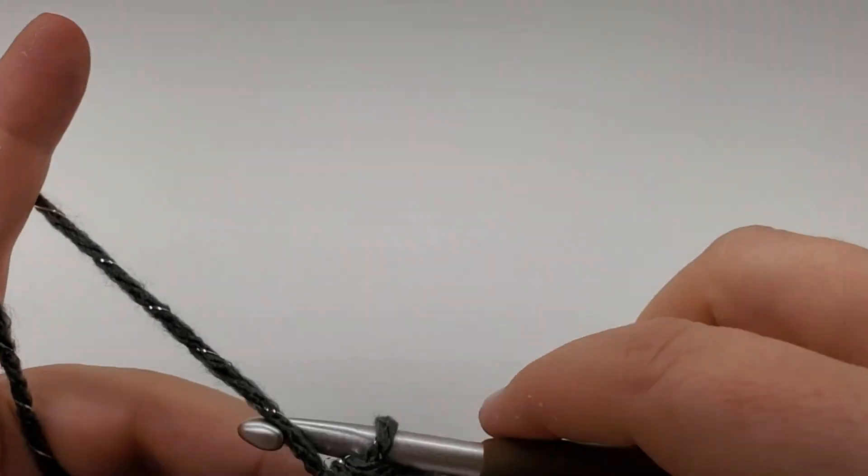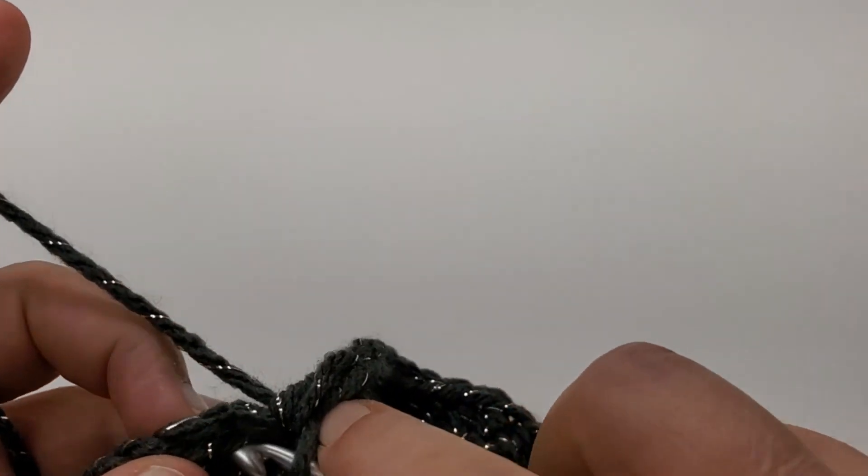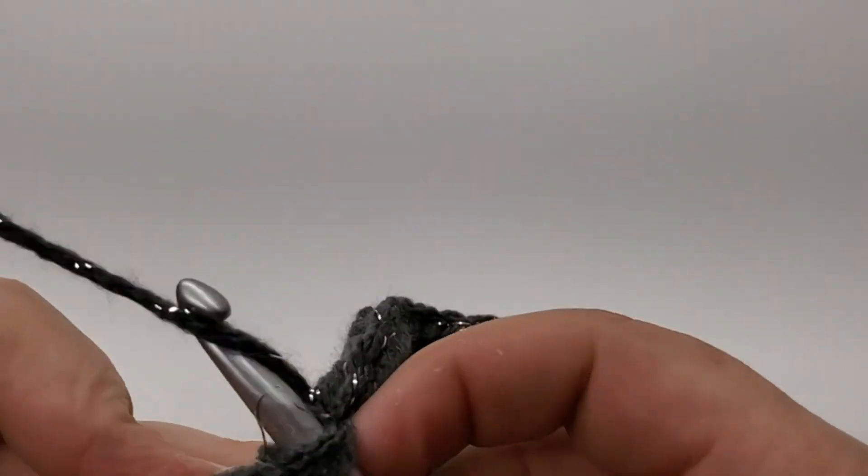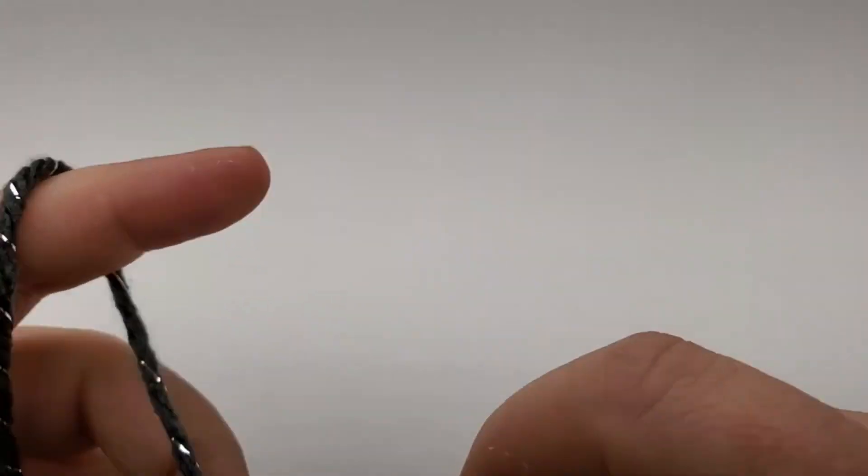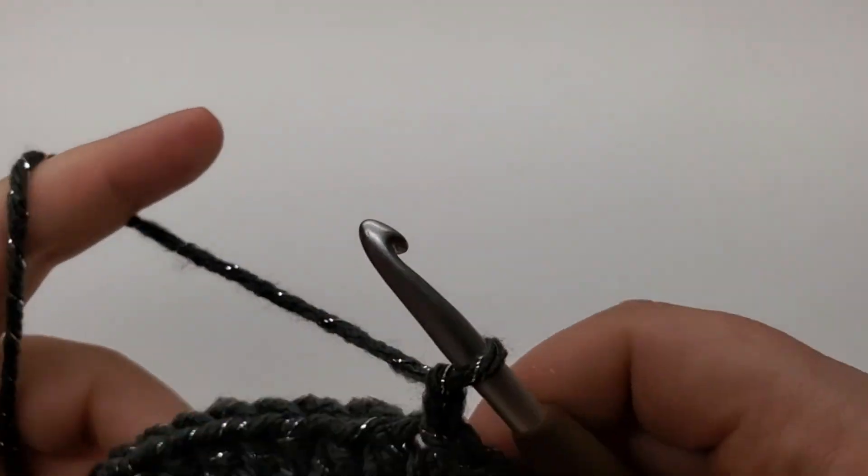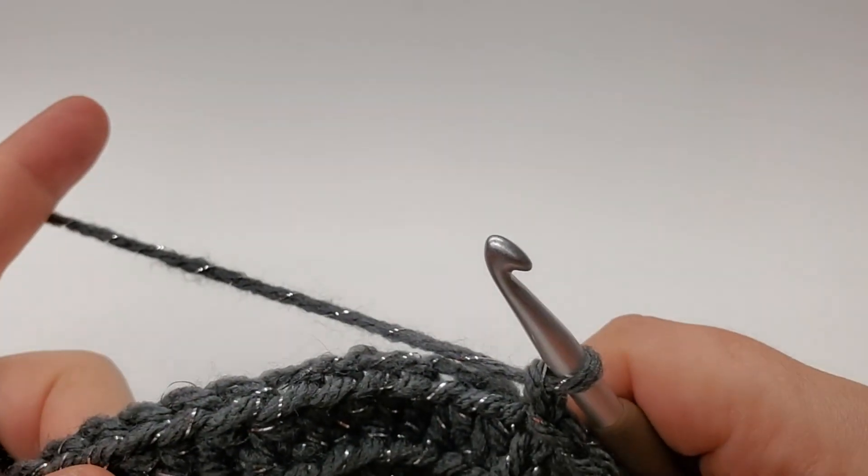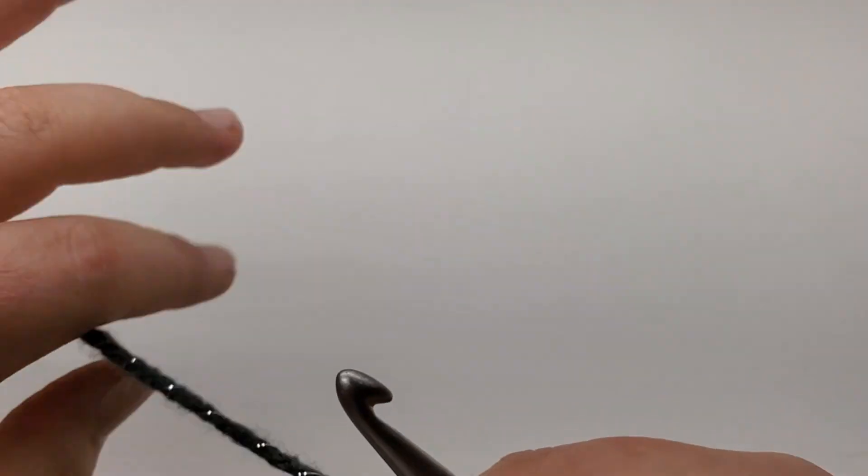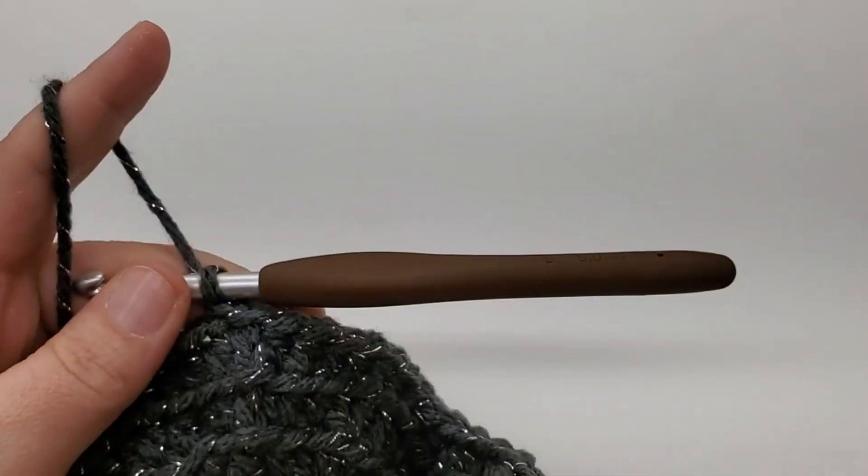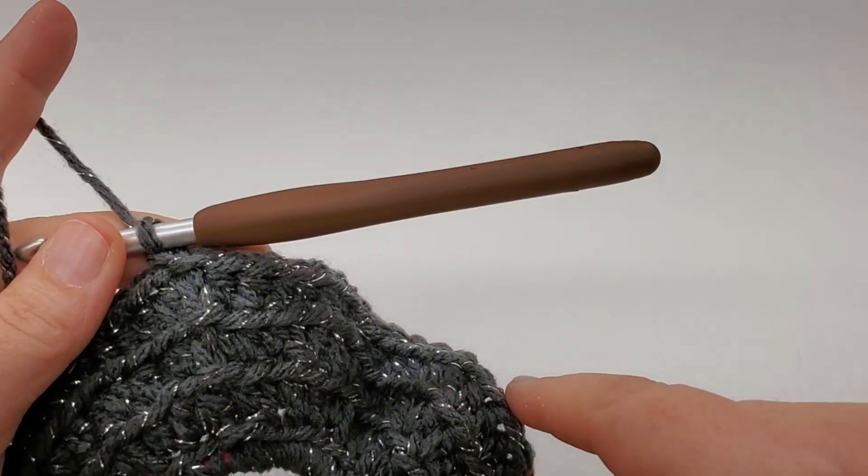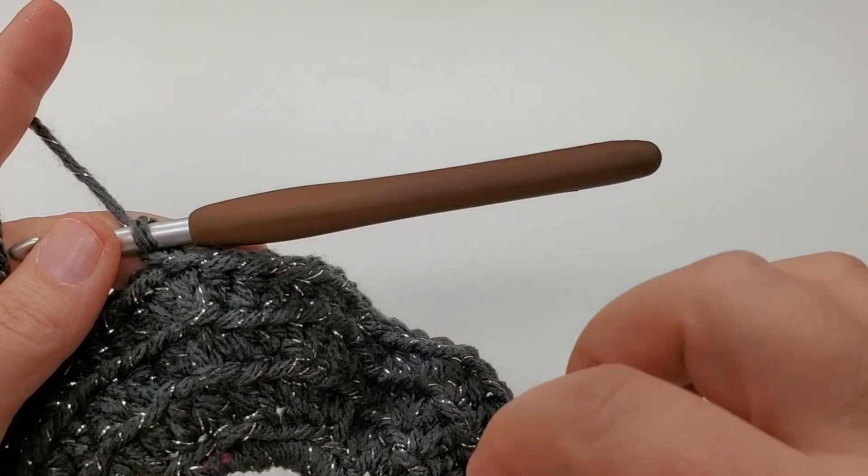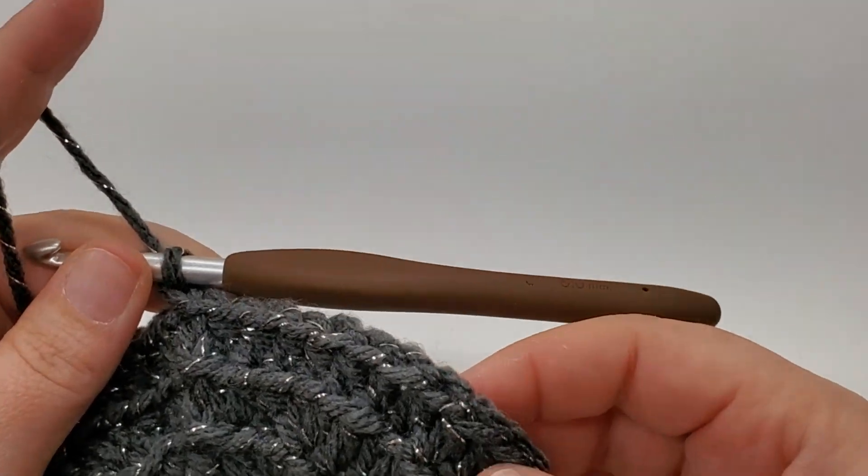So I made it back around. I still have the same stitch count, 62. So slip stitch to your first. Chain one. And we're going to go ahead and repeat round four. So this, so the one we're starting is round five. So we're going to repeat round five to 18, which is 14 rounds. So repeat round four, 14 rounds.